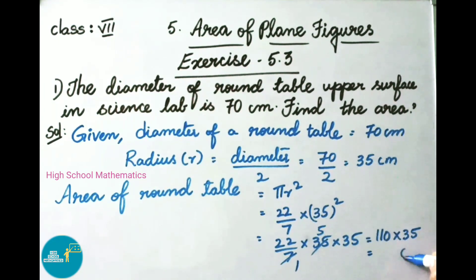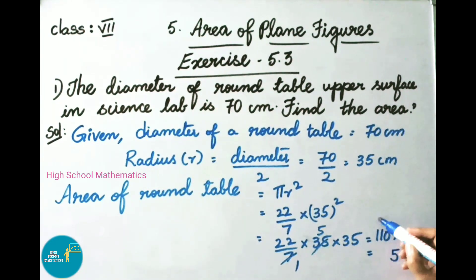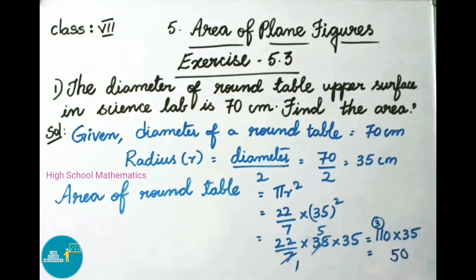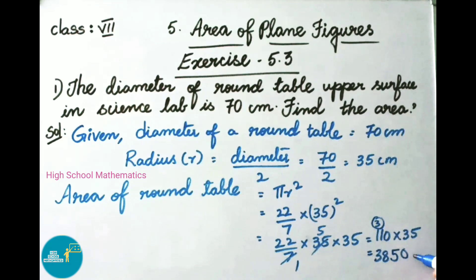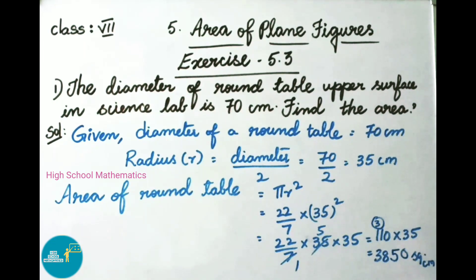5 carry 3. 35 ones are 35, plus 3 is 38. Therefore, the area of the round table is 3850 square cm.